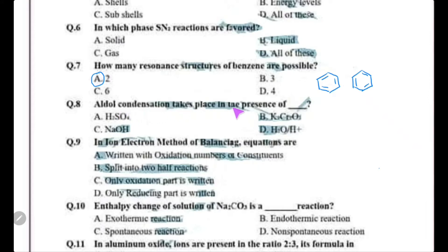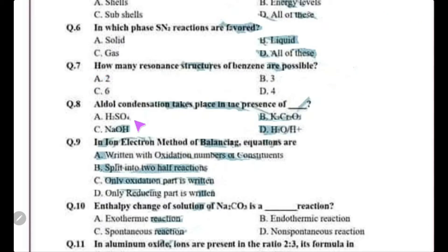Aldol condensation takes place in the presence of which catalyst? Aldol condensation involves two aldehydes, two ketones, or an aldehyde and a ketone condensing together to form a compound containing an aldehyde and alcohol group. It can be acid-catalyzed or base-catalyzed. Based on the book, the choice should be acid-catalyzed reaction.